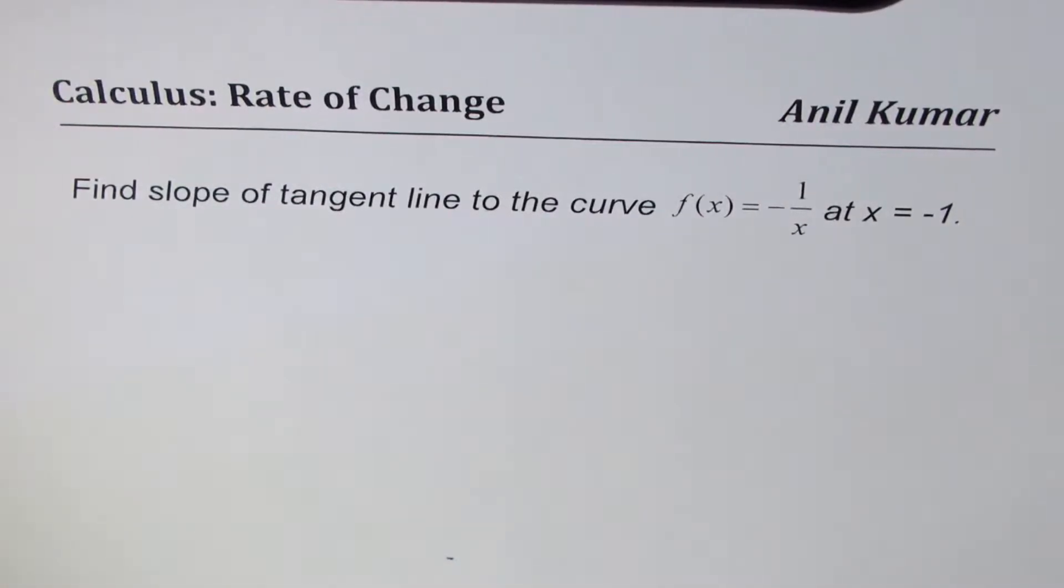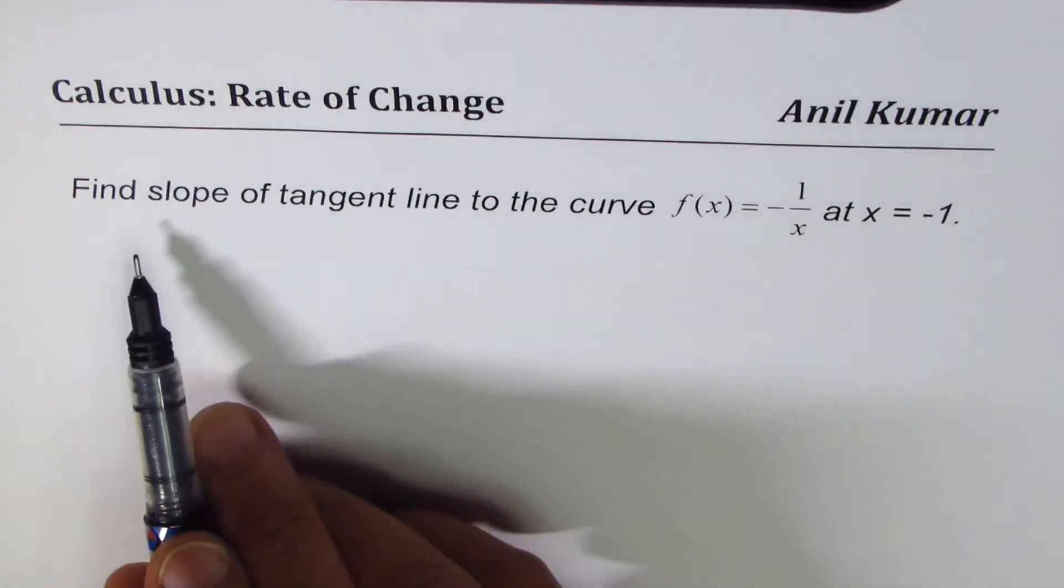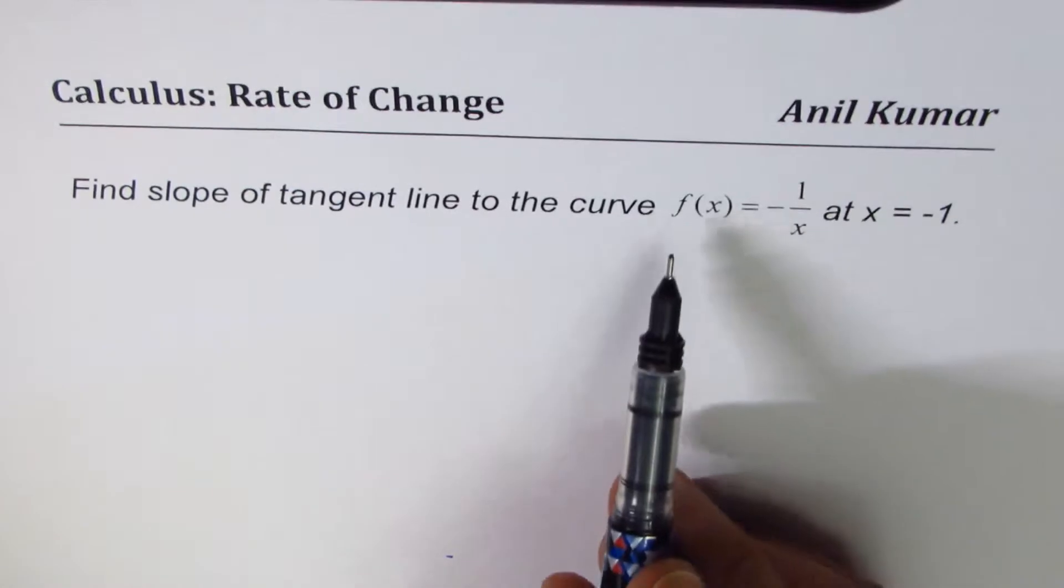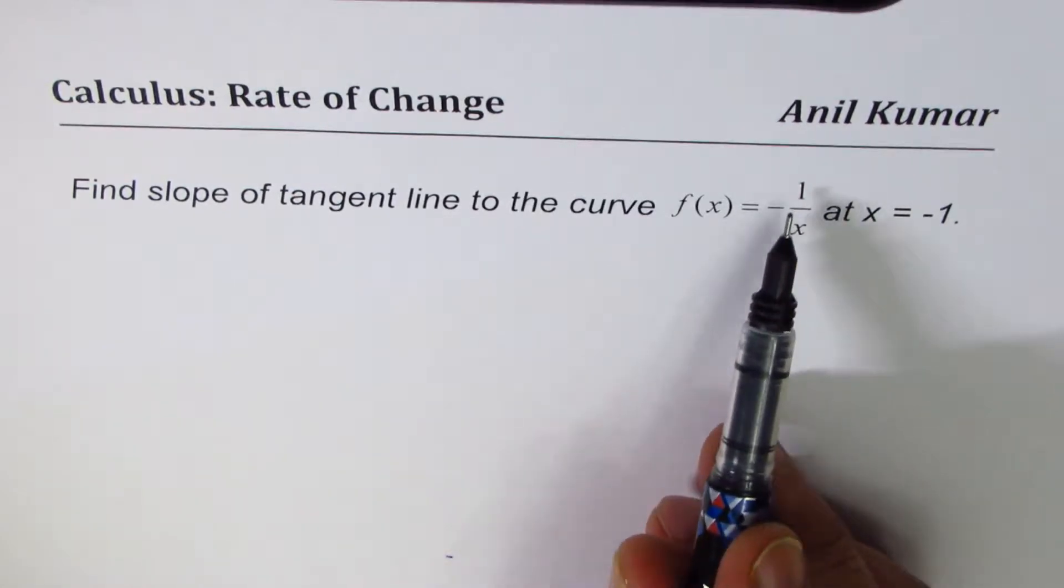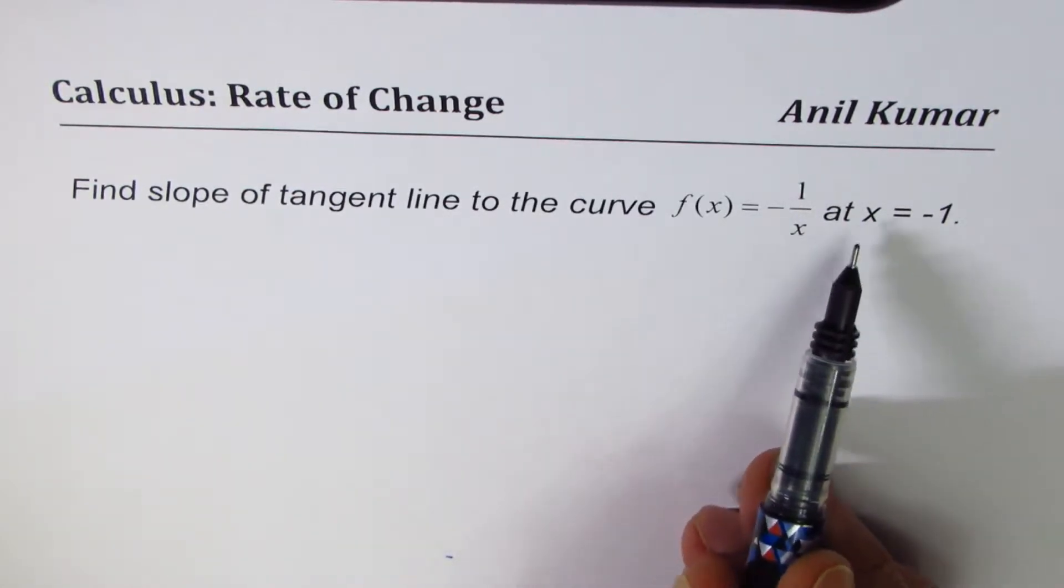I'm Anil Kumar. In this list of videos, we'll take up different functions and find slope of tangent line using difference quotient method. The question here is, find slope of tangent line to the curve f(x) equals minus 1 over x at x equals to minus 1.